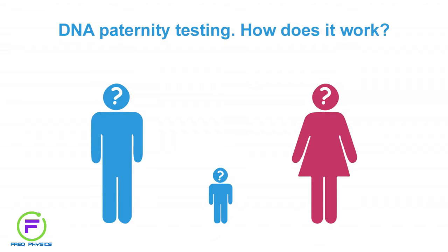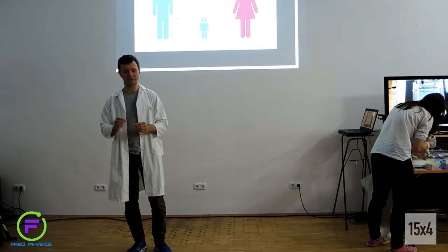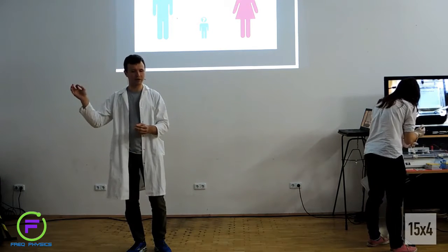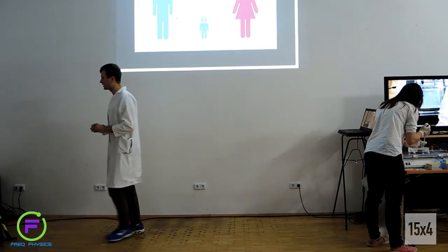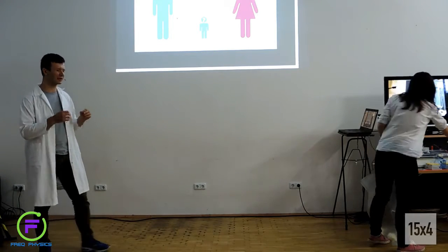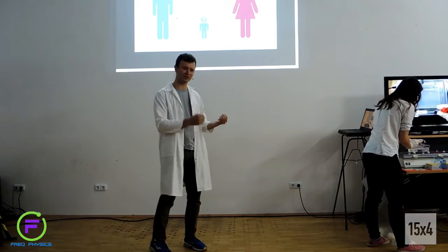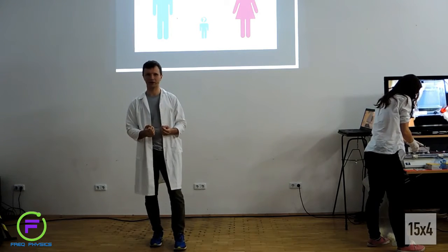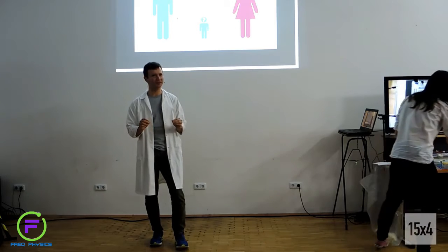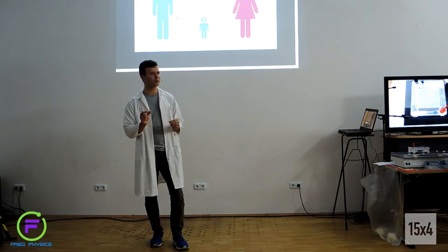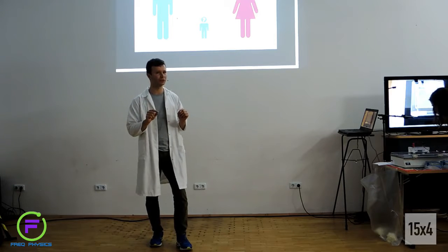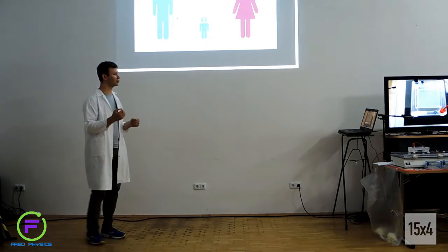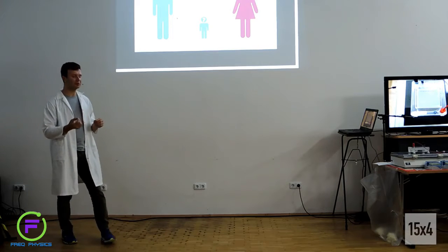The second scenario: DNA paternity testing. We have a kid, we have two parents, and we have an investigation — we really want to know: are these two parents really the parents of this kid, or is there another man or woman who is the parent? So basically, the main question is how the criminal story and this paternity story are related to each other.